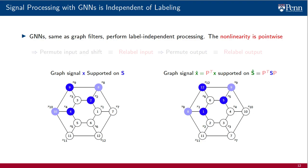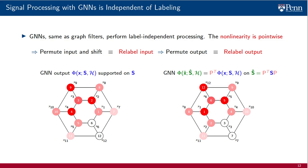Graph neural networks, same as graph filters, perform label-independent processing. This is because the non-linear function acts separately on each component. The implication is the exact same implication we discussed for graph filters. If we consider the signal on the right and a consistent permutation of the signal and the shift, all we have done is change the labels of the nodes. Thus, we require the processing to be impervious to this change. Whatever transformation happens on the non-permuted signal on the left should be replicated on the right. GNNs, same as graph filters, fulfill this request. This is what the equivariance theorem proves.